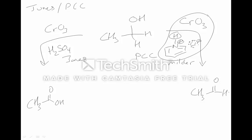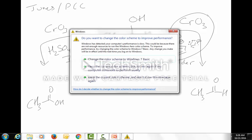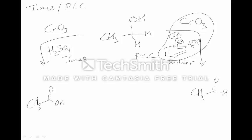With the Jones oxidation you go through the aldehyde and on to the carboxylic acid. You can look at mechanism 12.6 to see how the aldehyde undergoes further oxidation — essentially water attacks the aldehyde and you get a diol, called a hydrate, and that hydrate gets oxidized. We won't be asked to draw those mechanisms. That was all for a primary alcohol.